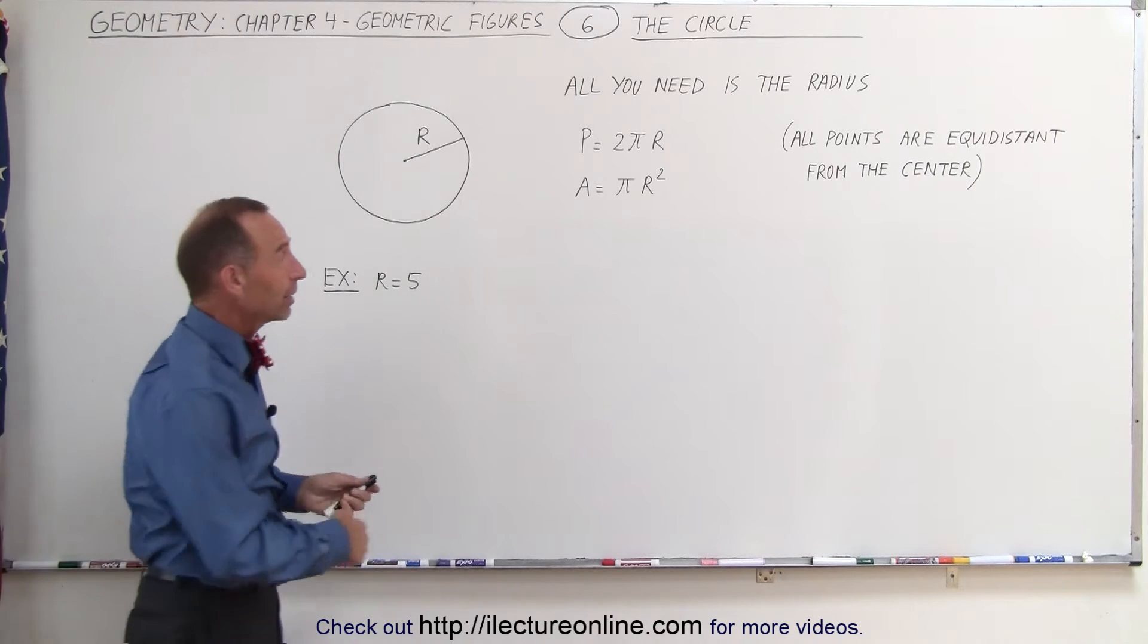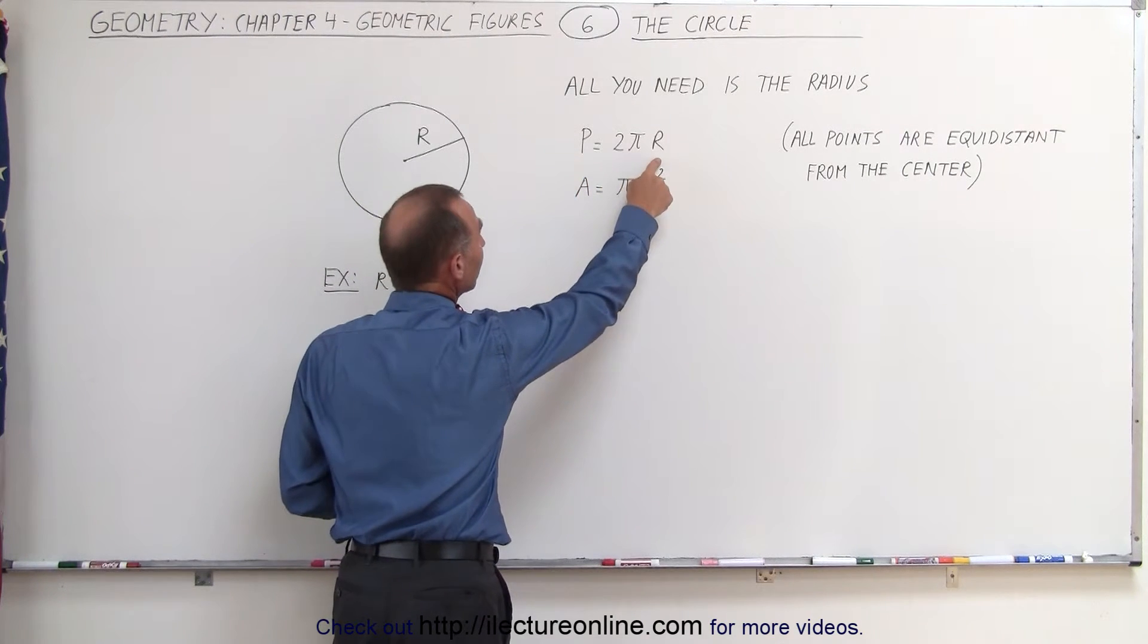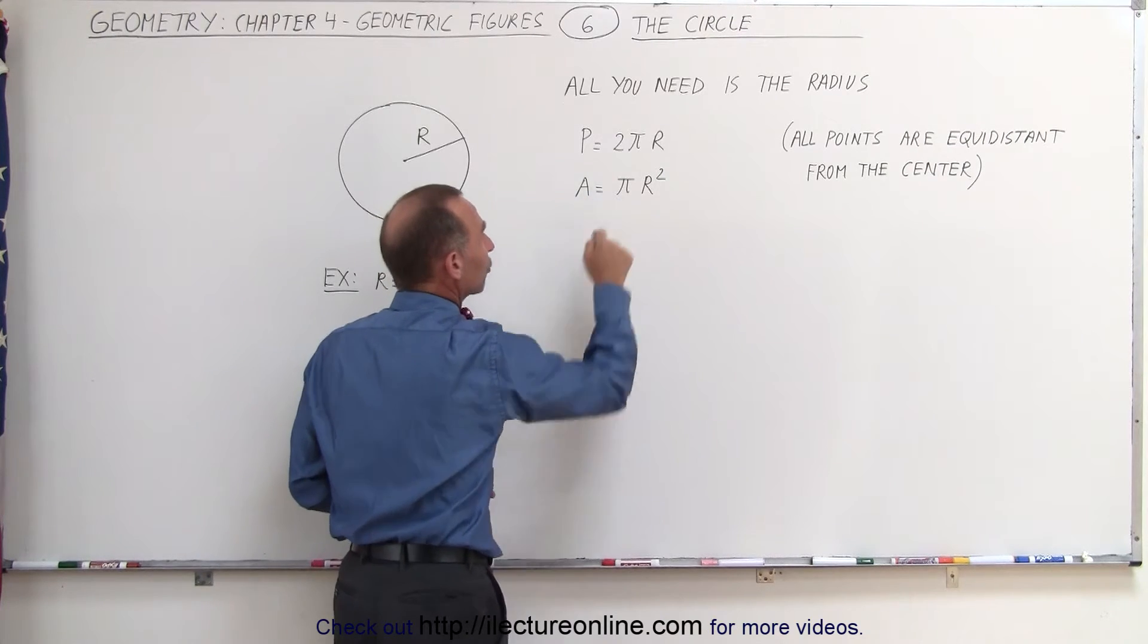Then it turns out to find the perimeter it is equal to 2π times the radius, and if you want to find the area it's equal to πr².